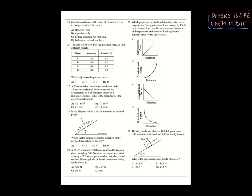Number twenty-five: how do gravitational forces differ from electrostatic forces? Gravity is always attractive only — nothing repulsive. It never pushes anything away; it always pulls everything in. Number twenty-six: which object has the greatest inertia? Inertia equates to mass. Greatest mass equals greatest inertia — choice D — regardless of speed.